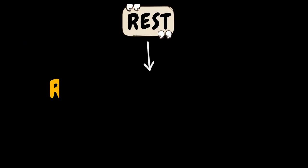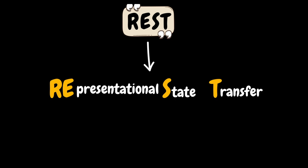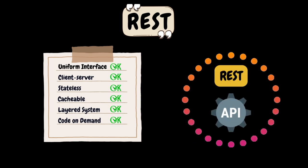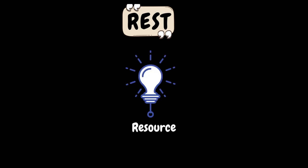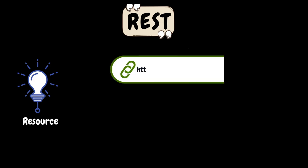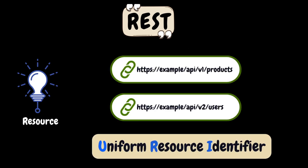Next, we have REST, which stands for Representational State Transfer. REST allows different software applications to communicate with each other over the internet. It is an interface that establishes principles to facilitate communication between systems. Any API that follows the REST rules or principles becomes a RESTful API. In a REST API, everything is considered a resource — these can be data objects or services you want to expose. Each resource is uniquely identified by a URI (Uniform Resource Identifier). For example, https://example.com/api/v1/products — this is also referred to as an endpoint.